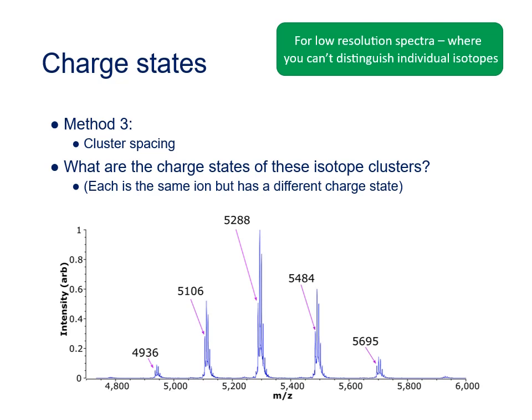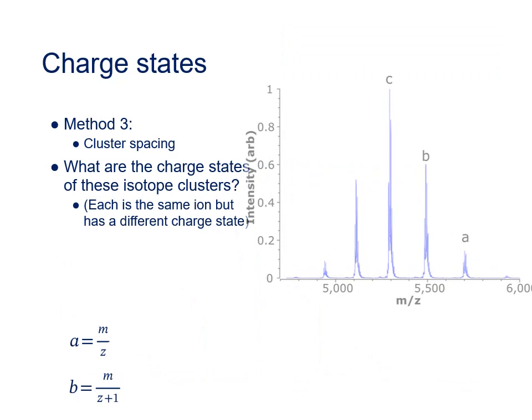Now we've zoomed back out again, we can have a look at the detail of the wider set of peaks. Now although it might look like these peaks are evenly spaced, actually they're not. The mass spacing between clusters at this high mass end is 211, and down at this end it's only 170. So as we get to lower mass, the spacing between the peak clusters gets less and less. And that's because these peaks are actually the result of viewing the same set of ions at ever increasing charge states. And it's because we can see these same ions at different charge states that we can work out what those charge states are.